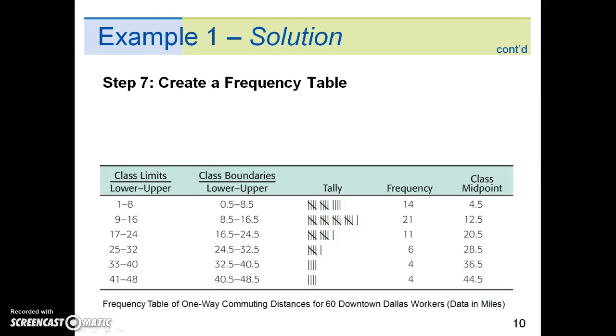Step 7 is to create a frequency table. So we assemble all the information into the frequency table. As a quick recap, in steps 1 through 3, we determine the class size with lower and upper limits. In step 4, we tally the data.